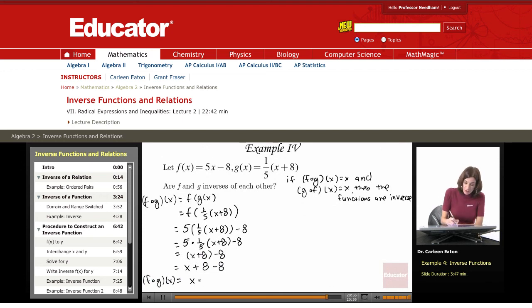Now let's see if it works out for g composed with f. That's going to be g of f of x. f of x is 5x - 8, so g of 5x - 8 is what we're looking for.